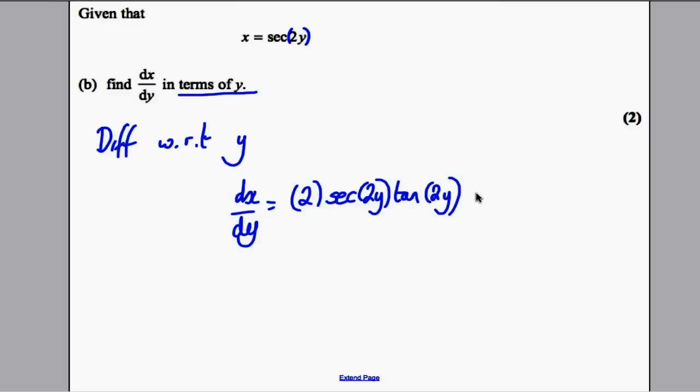And then that's done. So that simplifies to 2 sec 2y tan 2y. And there you go. You have your dx by dy.